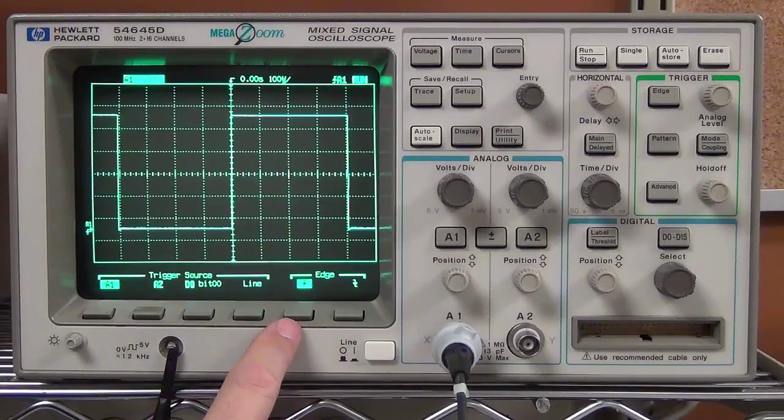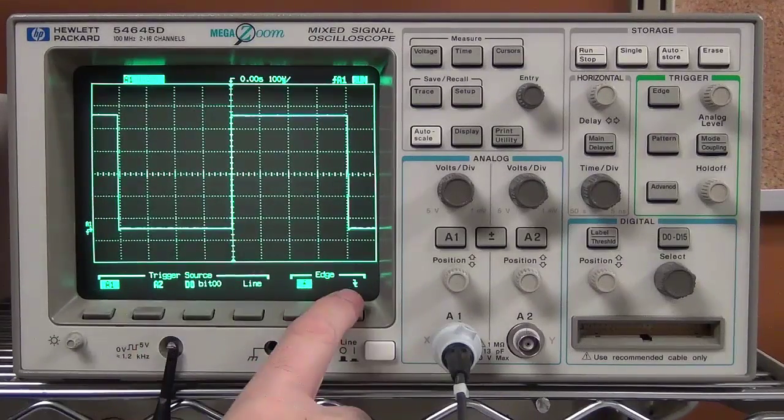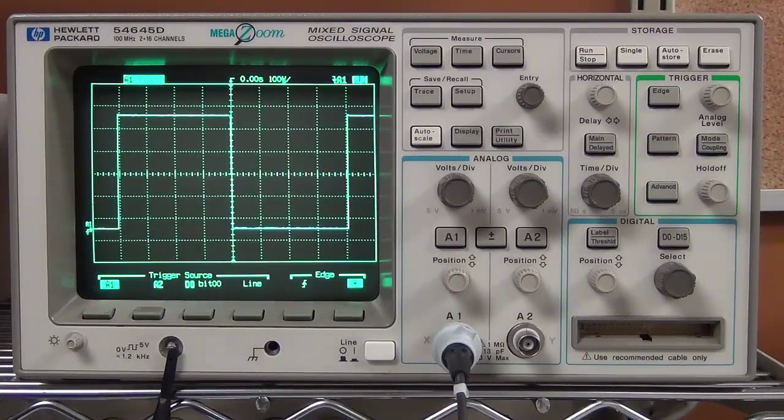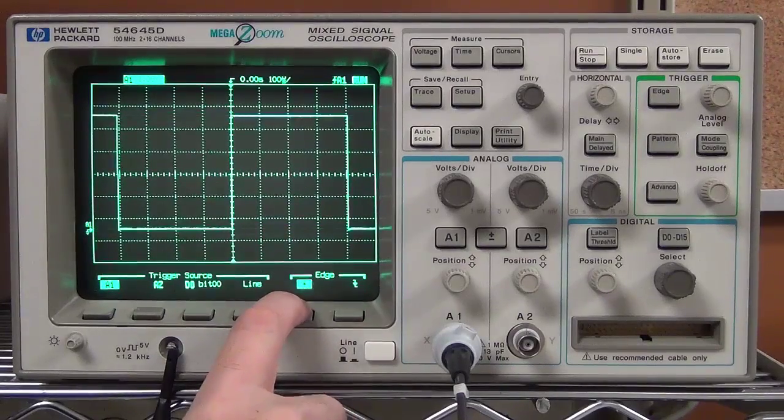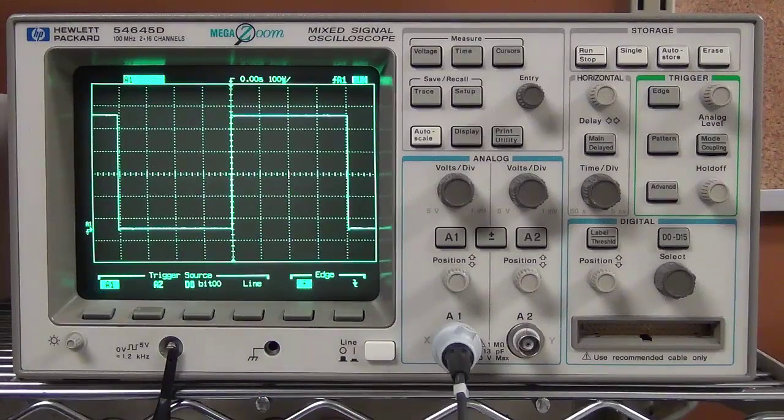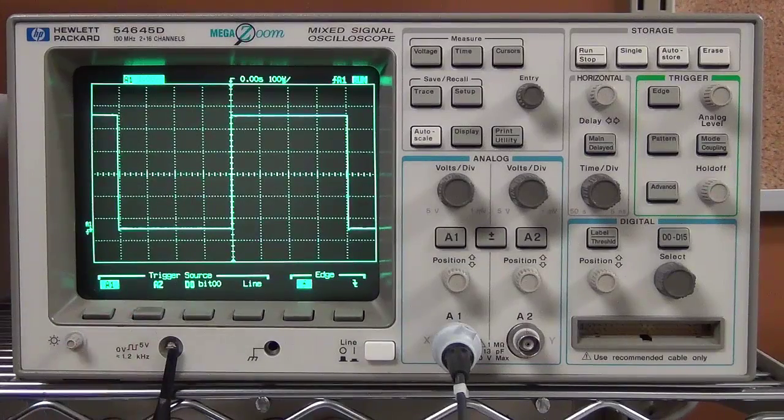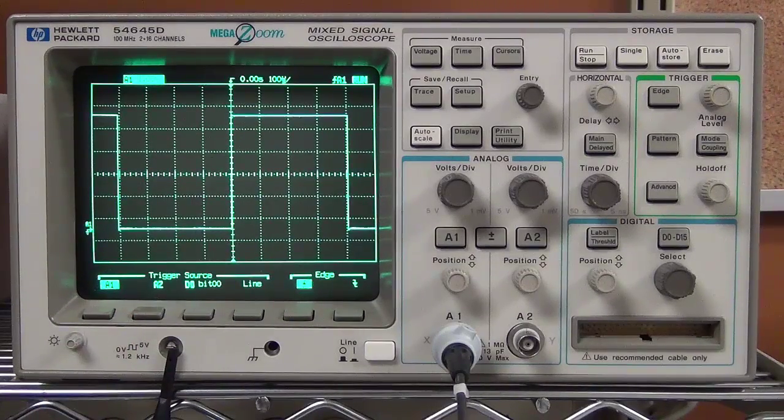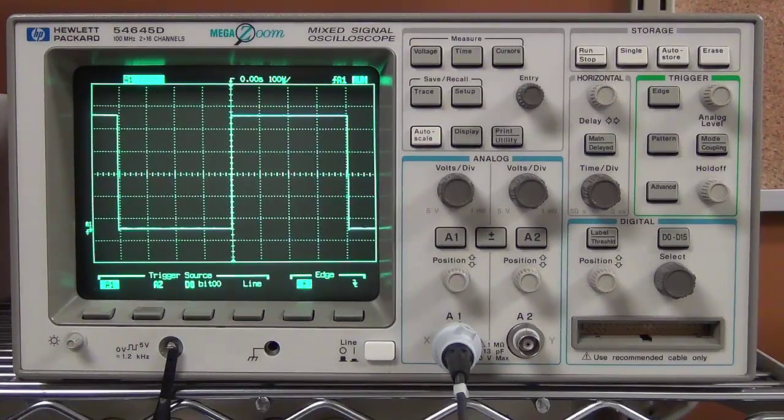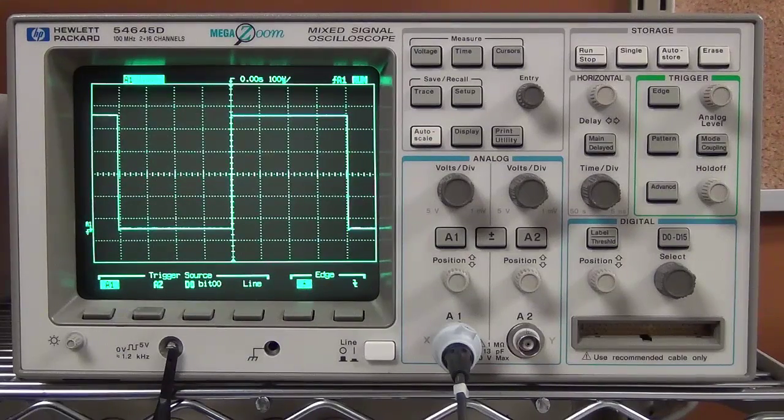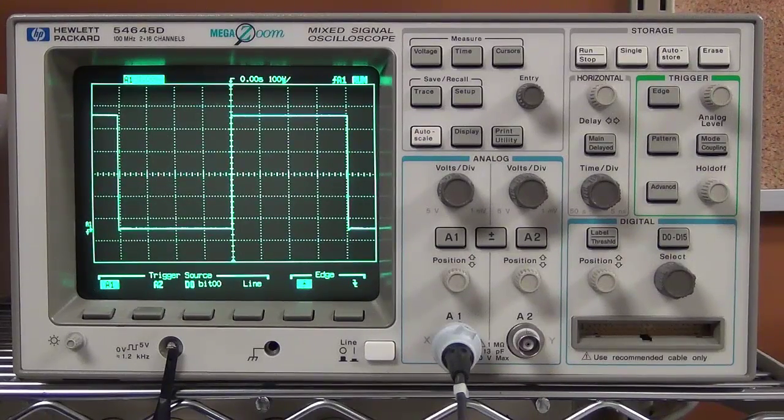The other option here that you have is you can trigger the scope from the leading edge or from the trailing edge of the wave. So that's an option that you'll use often. The trigger source between channel one and channel two is what you'll want to do as well. You always want to trigger from a signal that actually has a source, and if you have two waves that you're looking at, you generally want to trigger off the slowest one.